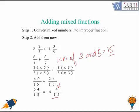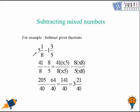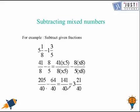Now let's try a subtraction question. The steps remain the same — first convert the mixed numbers into improper fractions, giving 41 over 8 take away 8 over 5. We find the LCM of 8 and 5, which is 40. Multiply the first fraction by 5 and the second by 8, then subtract: 205 take away 64 is 141, giving 141 over 40, which equals 3 and 21 over 40.